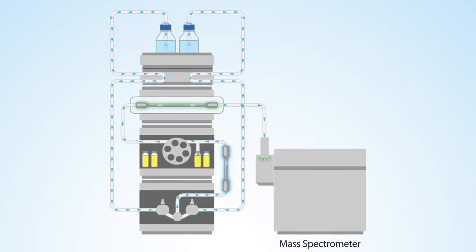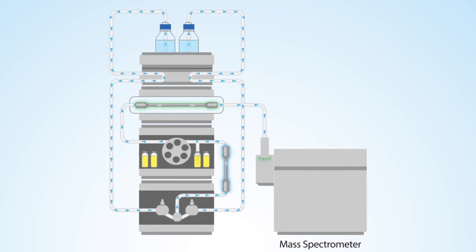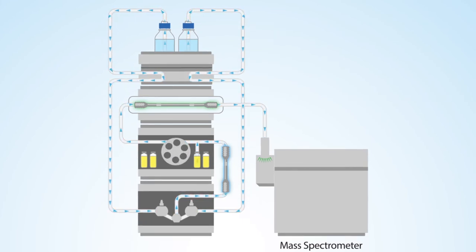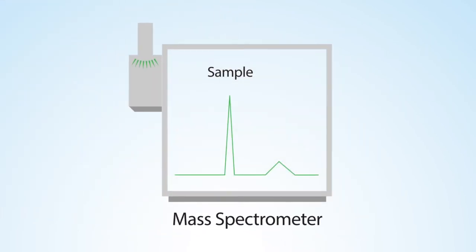By adding the delay column, we prevent the PFAS introduced upstream of the injector from coeluting with the sample by temporarily trapping them. Accordingly, when we inject a sample, the sample PFAS will elute first and the contaminant material will elute later.